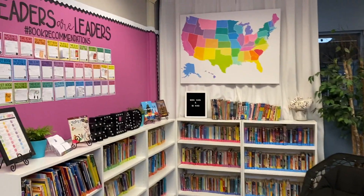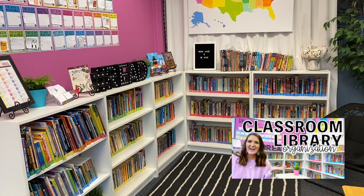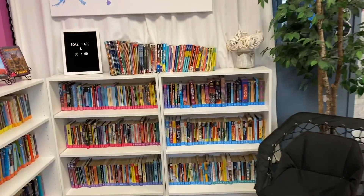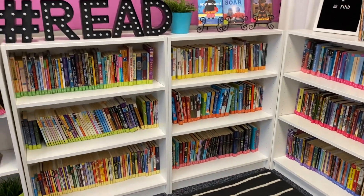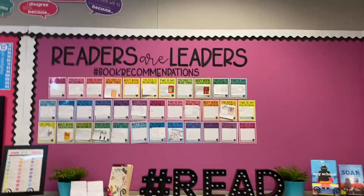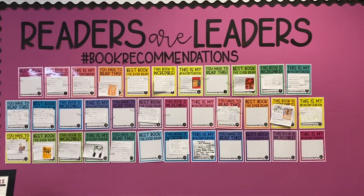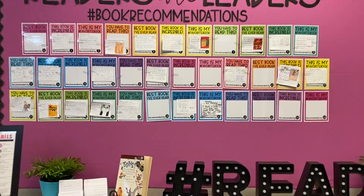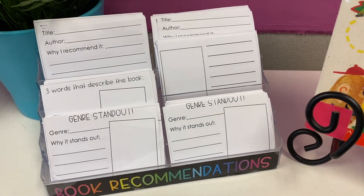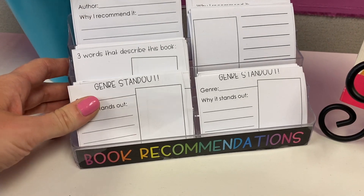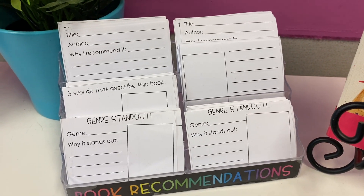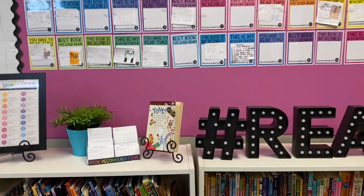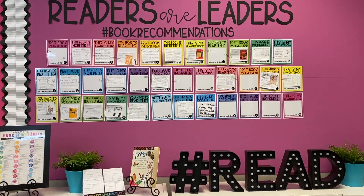Over here is our classroom library. If you have not watched my other video all on classroom library organization, that might be helpful if you are looking to set up and organize a classroom library. I talk all about how I organize my books, my book spine labels, all the information about that. Above our classroom library, we have our student book recommendations. I will link everything in the video down below — these are available at my Teachers Pay Teachers store. Students fill out one of these book recommendation cards when they want to recommend a book to classmates. The blank rectangles are for drawing the book cover, and they hang them right up here so that as students are browsing for books, they have some good recommendations.